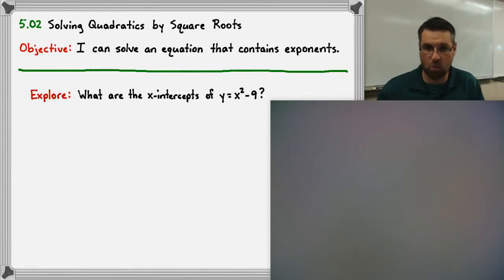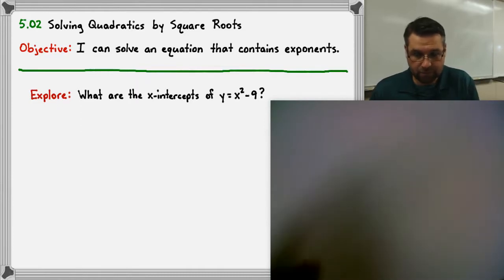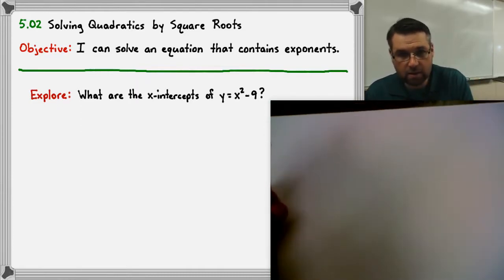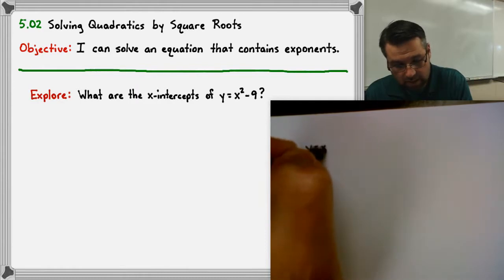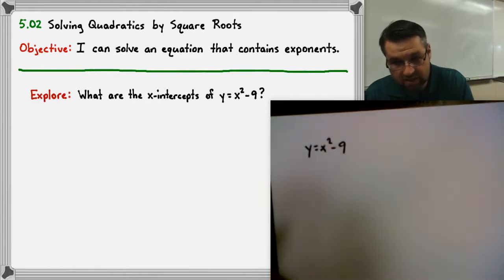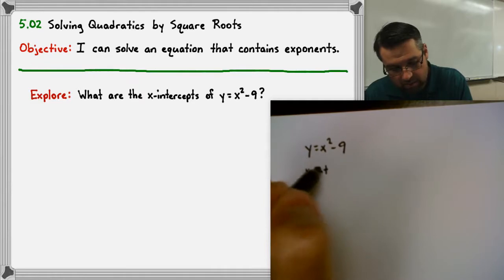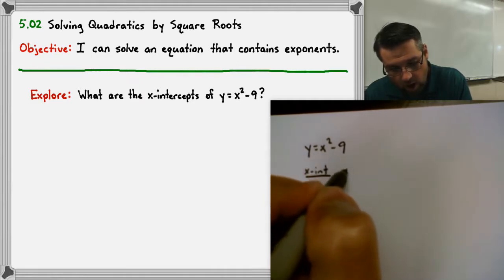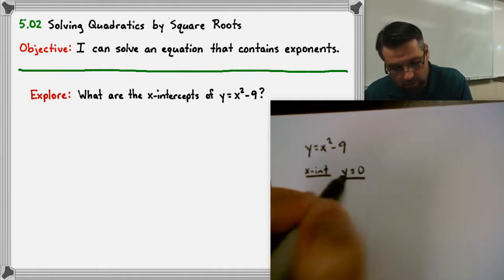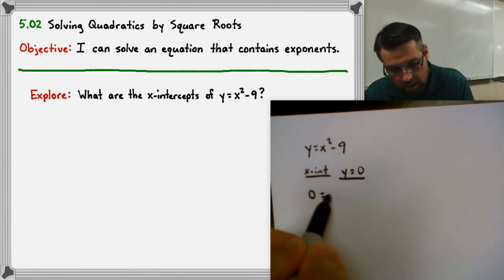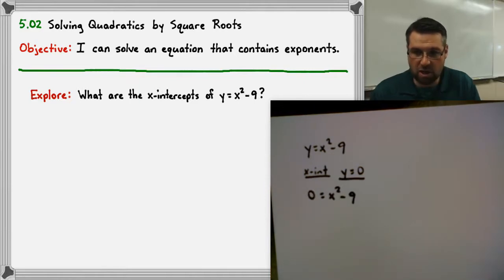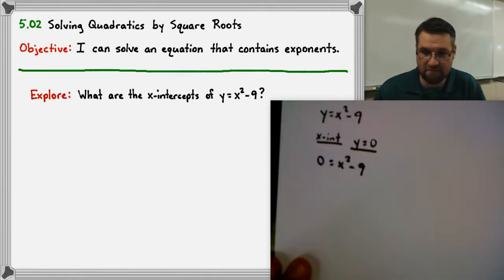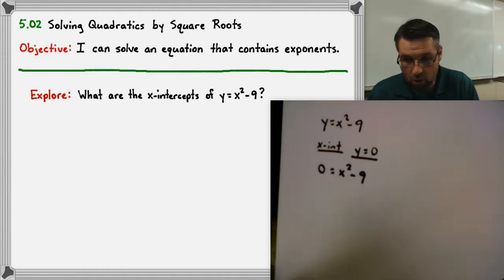What are the x-intercepts of the parabola y equals x squared minus nine? We start with y equals x squared minus nine, and we're looking for the x-intercepts. Remember, the x-intercepts are when y equals zero. So we set y equal to zero, and then we can solve this equation. Last time we talked about solving this equation by factoring, so we do our quadratic factoring.